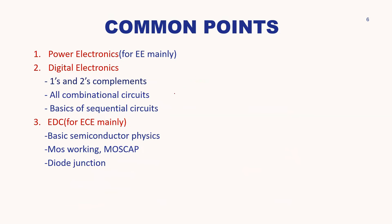Next, I have mentioned Power Electronics. Power Electronics is mainly for the EE department — the Instrumentation and EE department students have to be very clear with the Power Electronics subject. After that, Digital Electronics is a basic subject: be clear with number systems, ones and twos complement, combinational circuits, different types of MUX circuits, designing different circuits from multiplexers, designing XOR/XNOR using NAND or NOR gates, and basics of sequential circuits.